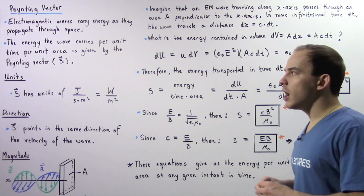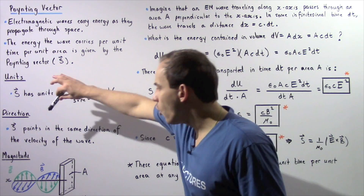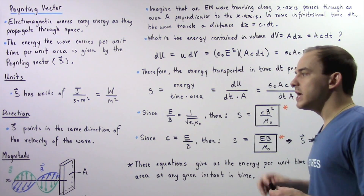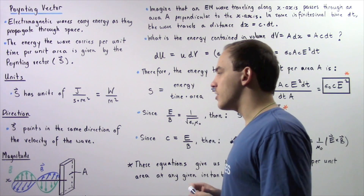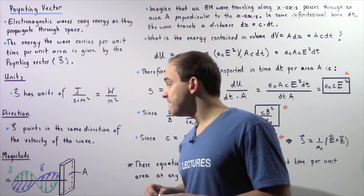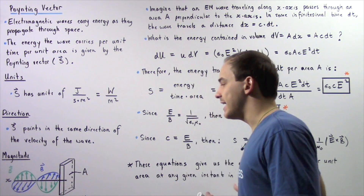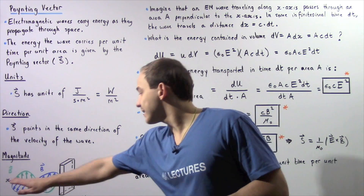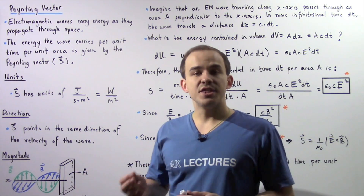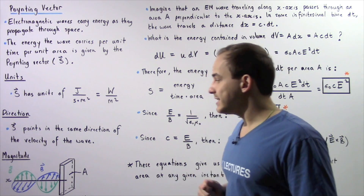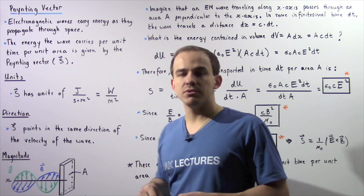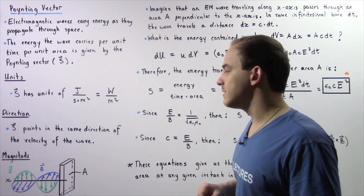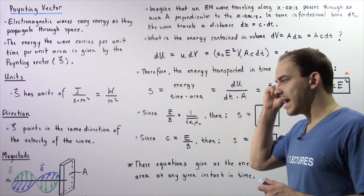The direction of the Poynting vector points in the same direction as the velocity of the wave. So if the wave is propagating in the positive direction along the x-axis, the Poynting vector also points in the positive direction along the x-axis.